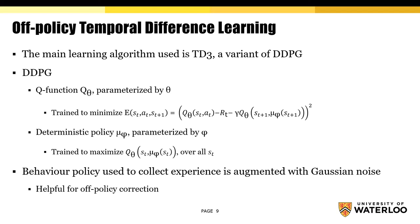HIRO uses off-policy temporal difference learning. Specifically, it uses TD3, which is a variant of the DDPG algorithm. For DDPG, there's a Q function parameterized by theta, trained to minimize the average Bellman error over all sample transitions. There's also a deterministic policy mu, parameterized by phi, trained to yield actions which maximize the Q value of each state. There's also a behavior policy used to collect experience, augmented with Gaussian noise, which is helpful for the off-policy correction.